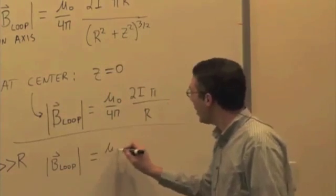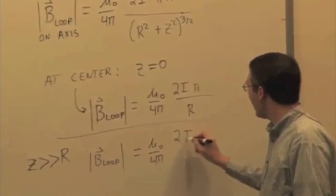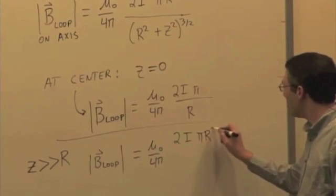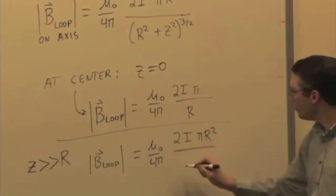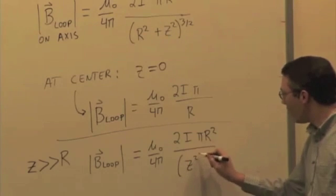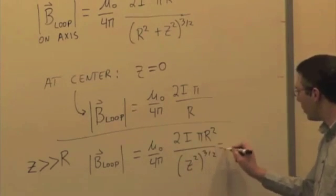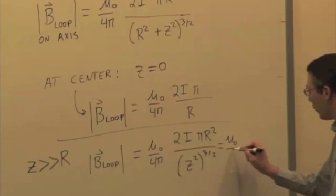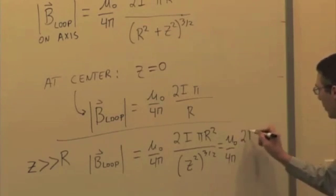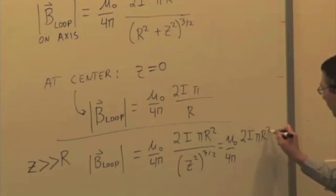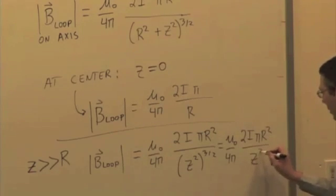So, this is mu naught over 4 pi, 2i pi r squared over z squared to the 3 halves, or mu naught over 4 pi, 2i pi r squared divided by z cubed. So, it's 1 over the distance cubed. Where have we seen that distance dependence before?